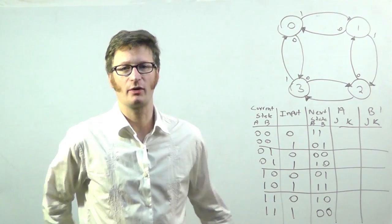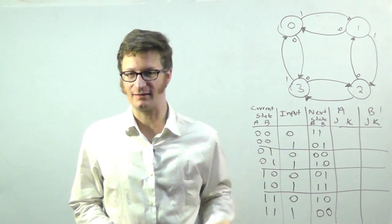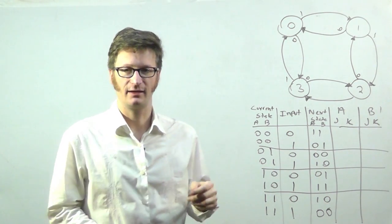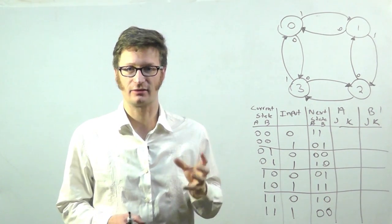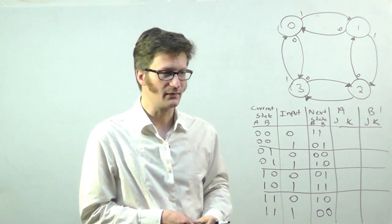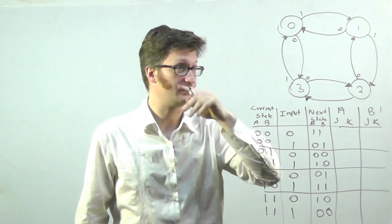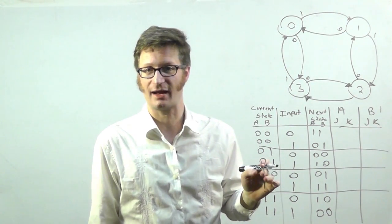In this one I'm going to talk about how to take a state diagram or a state table and turn it into a digital logic circuit using JK flip-flops, and here for this one I have a two-bit up-down counter.